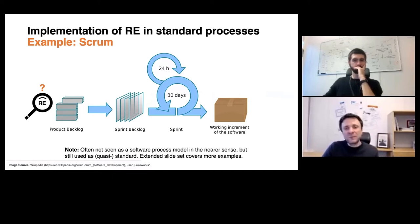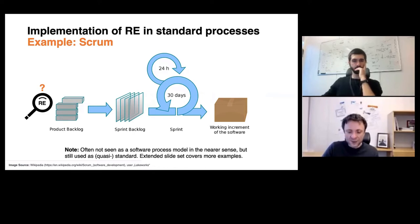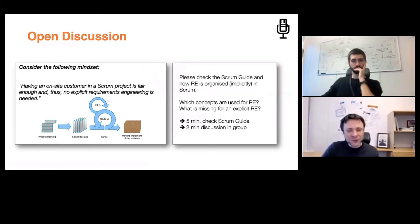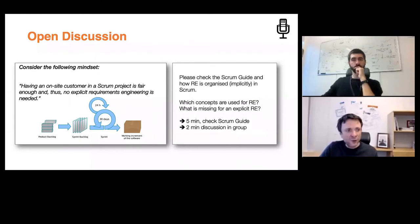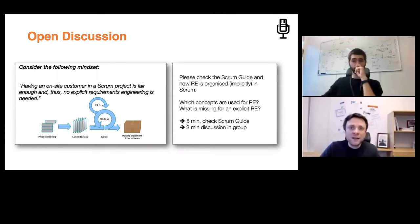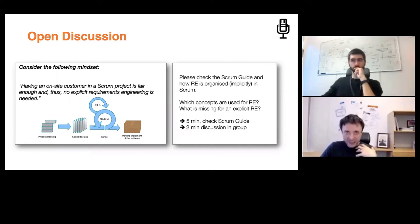One of the prerequisites to make Scrum work is being in constant exchange with a customer. Consider the following mindset: having an on-site customer, meaning being able to constantly communicate with the customer in a Scrum project, is fair enough — and therefore no explicit requirements engineering or explicit definition of artifacts, roles, activities, or refinement is necessary.